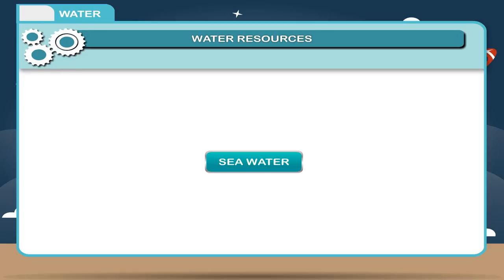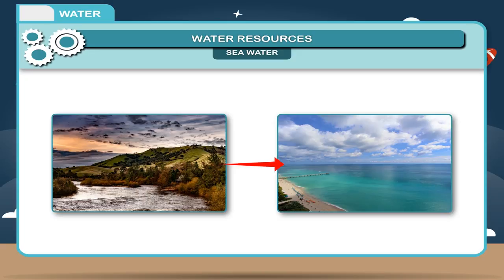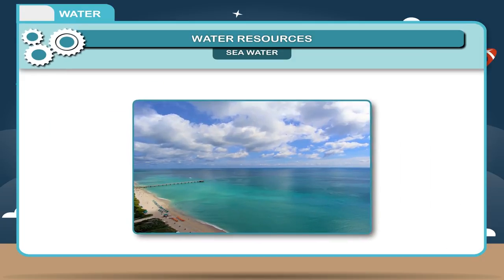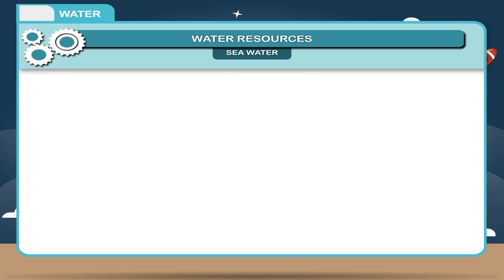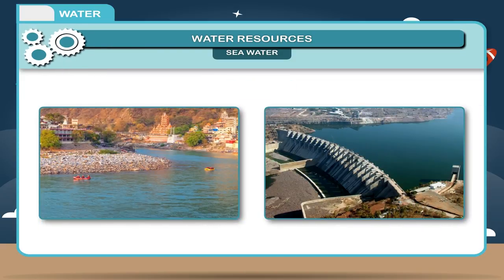The sea is a huge water body in which various rivers come and join. All mineral salts brought by rivers reach the sea. The content of sodium chloride or common salt is maximum, resulting in the salinity of sea water. Sea water has to be desalinated before use. Water is costly in Gulf countries because of the cost of desalination, but in our country water need not be desalinized.